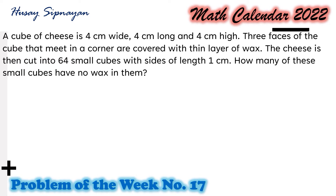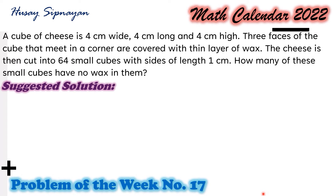For Week 17: a cube of cheese is 4 cm wide, 4 cm long, and 4 cm high. Three faces of the cube that meet in a corner are covered with a thin layer of wax. This cheese is then cut into 64 small cubes with sides of length 1 cm. How many of these small cubes have no wax in them? Here is our suggested solution.